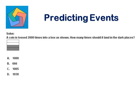Now in order to calculate the number of times any event is going to appear, we should calculate the probability of it first. What is the probability of landing here in the dark places for the coin?